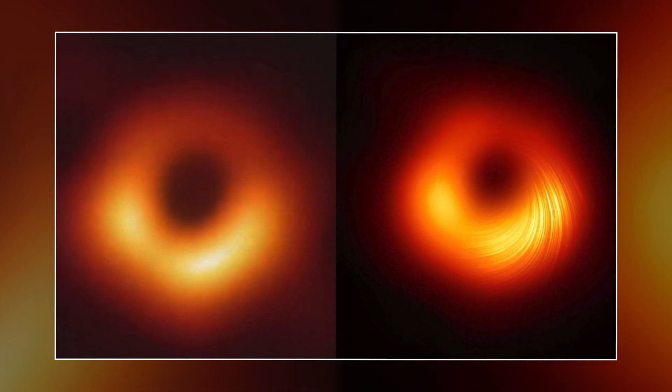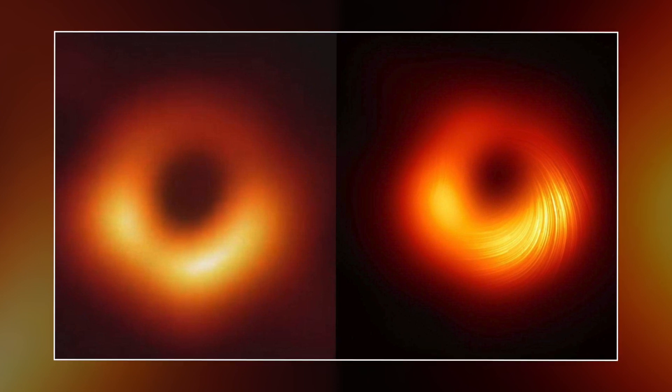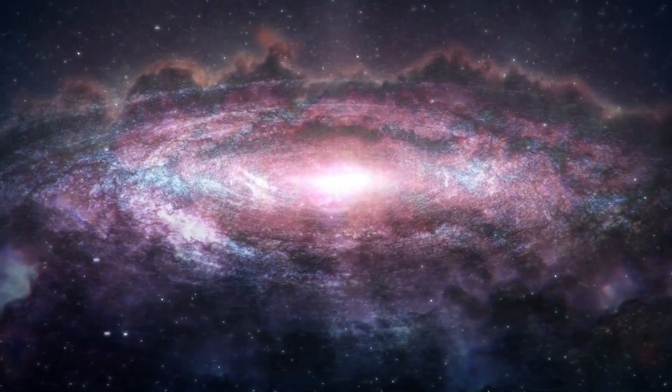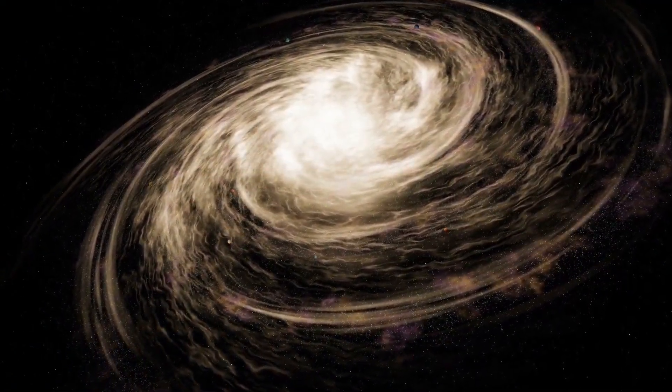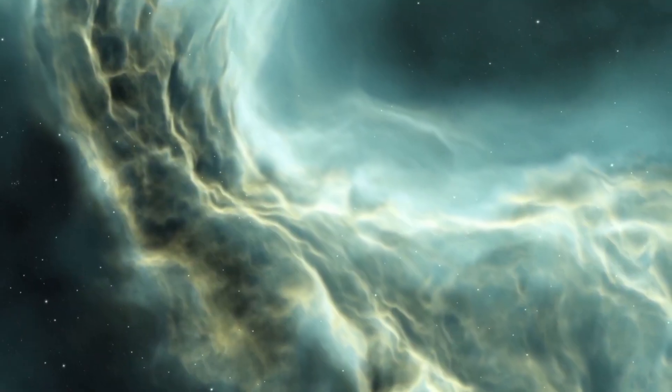The only difference is a slight blur in the image of the Sagittarius A star, according to astrophysicist Paul Teat. Our galaxy's black hole is more fussy, restless, like a child, and harder to get a clear picture of something that is constantly changing.